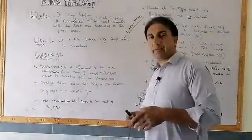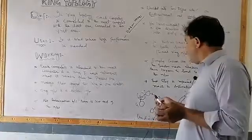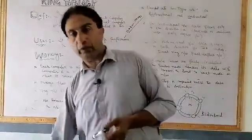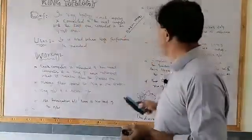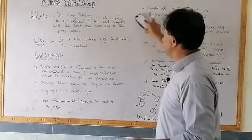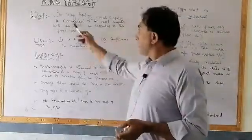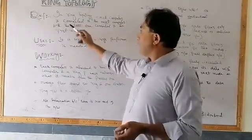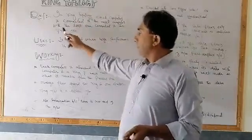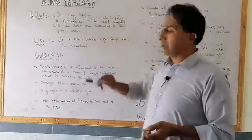This is a type of topology in which one computer is attached to the second computer, the second to the third, and the third to the fourth, and so on. The definition is: in a ring topology, each computer is connected to the next computer, with the last one connected to the first one.